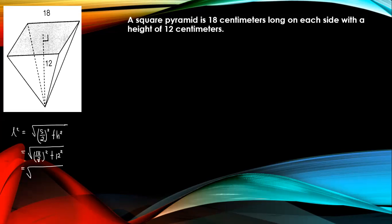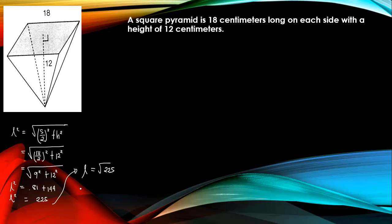Square root: 18 divided by 2 is 9. 9 squared plus 12 squared: 9 times 9 equals 81, plus 12 squared equals 144. 81 plus 144 is equal to 225. So the slant height equals the square root of 225, which is equal to 15 centimeters. This is now our slant height.